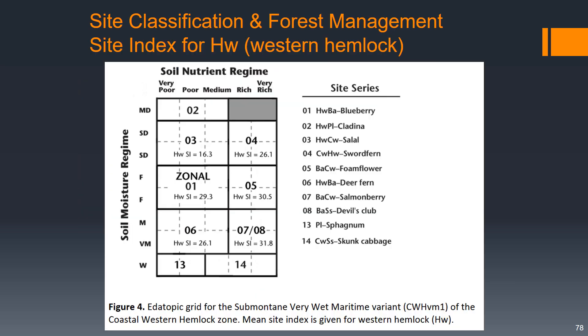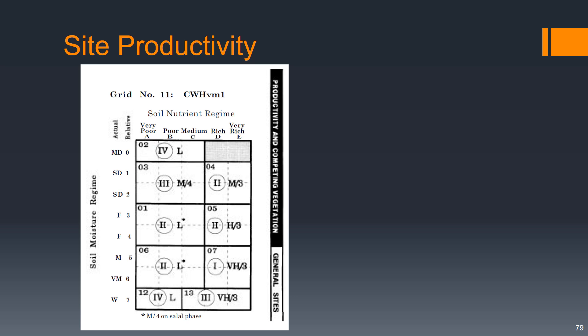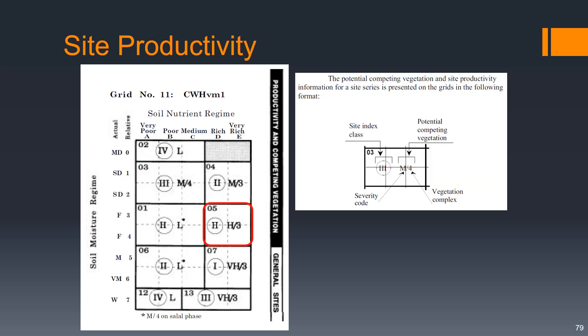This is detailed site index information for western hemlock for the site series of our study area. In our site series, the site index is 30.5, meaning we would expect that on average after 50 years the dominant western hemlocks at this site would be 30.5 meters tall. In some field guides this is presented with less detail, with a Roman numeral II as the site index class for our site series.